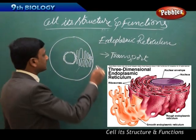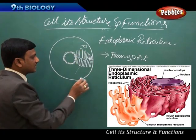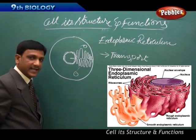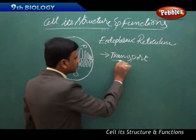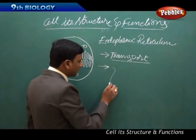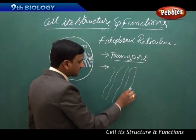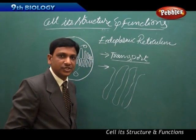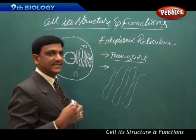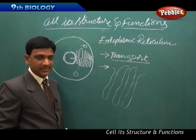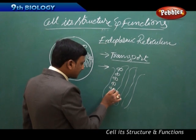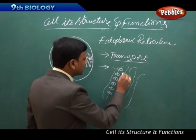The endoplasmic reticulum transports substances inside the cytoplasm from one place to another, and also helps transport material from the nucleus to other areas. Another function is that it provides a surface for the synthesis — that is, the preparation — of different materials. This synthesis is done by special organelles called ribosomes.